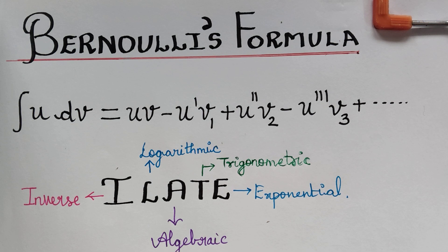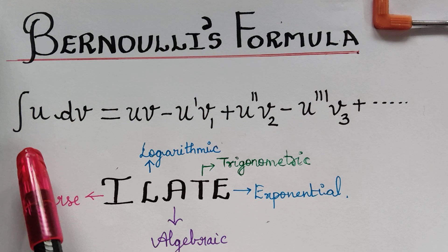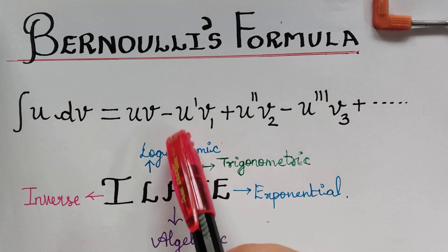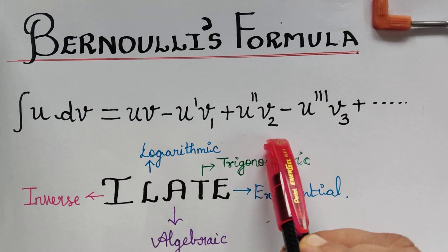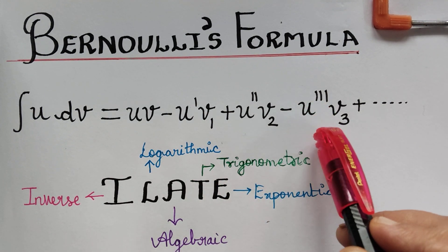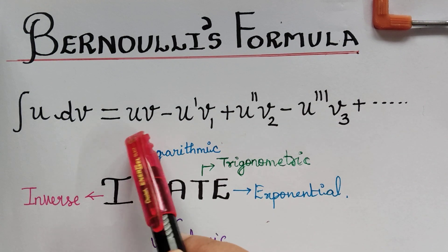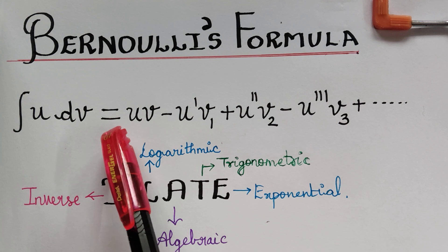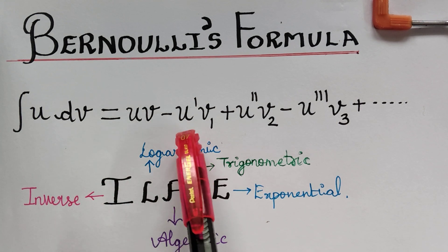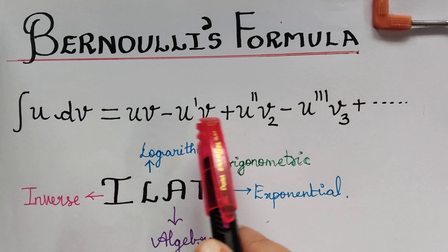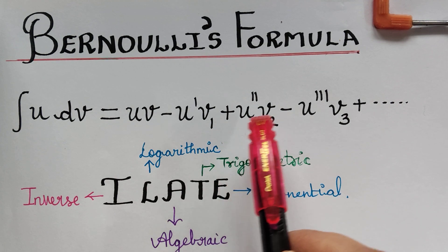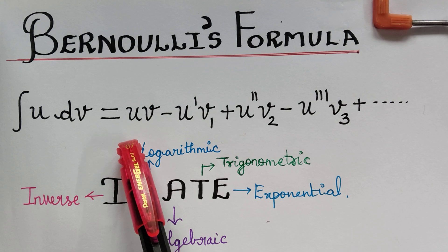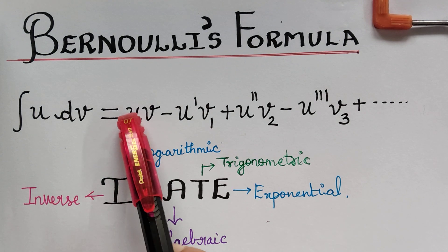The formula is given by: integral u dv equals uv minus u-dash v1 plus u-double-dash v2 minus u-triple-dash v3, and so on. If you see the signs, they keep alternating — the first term has a positive sign, the second term has a negative sign, then positive, then negative, and so on.